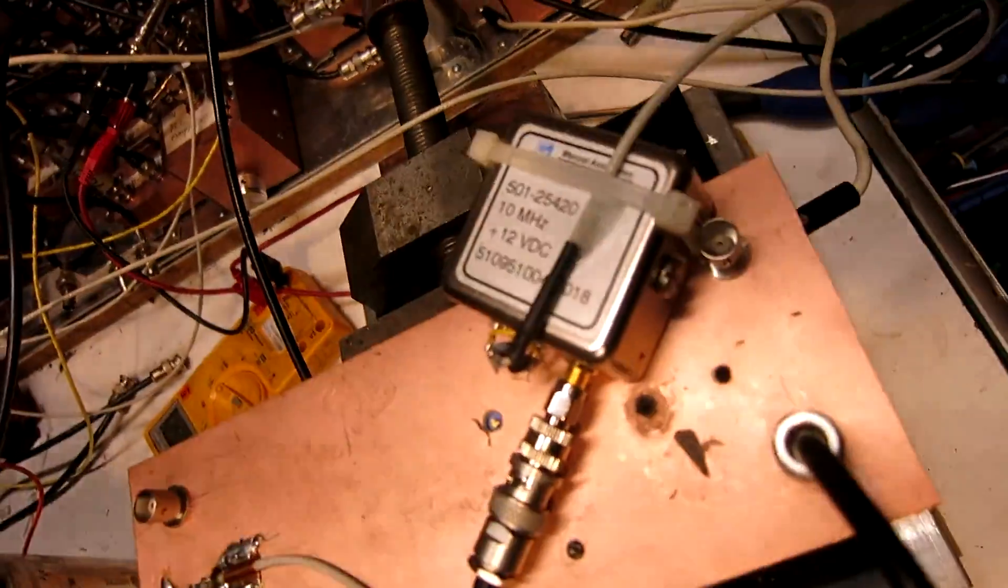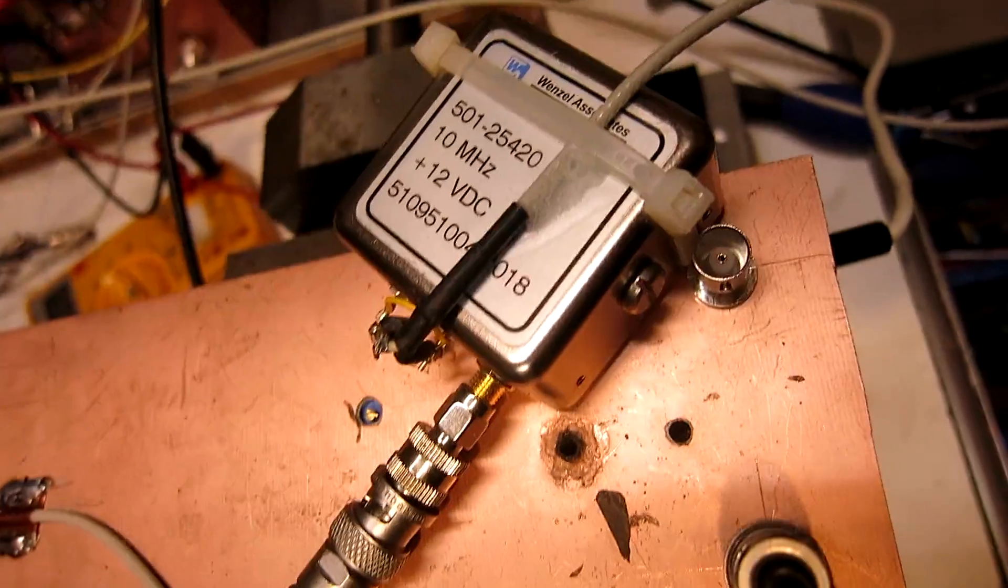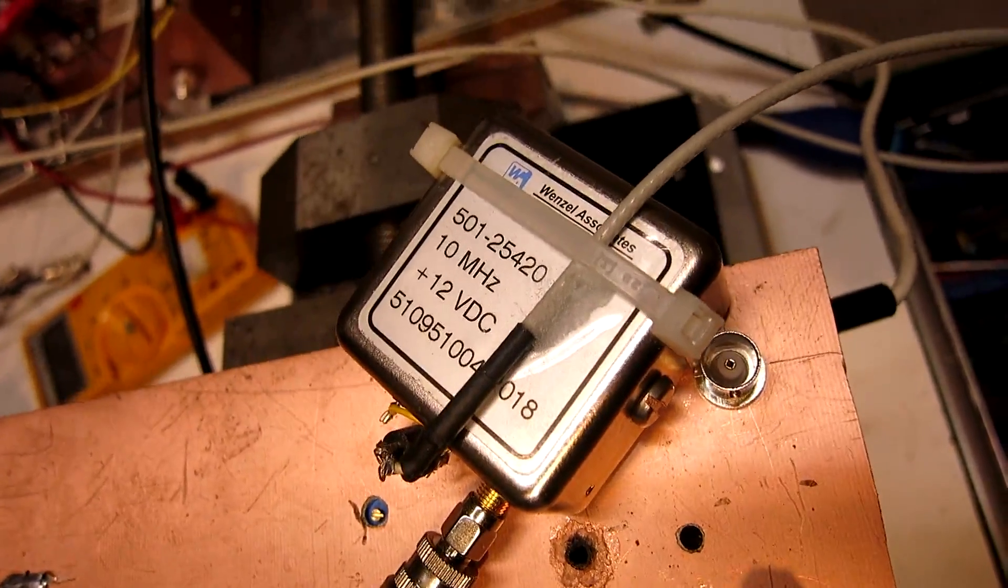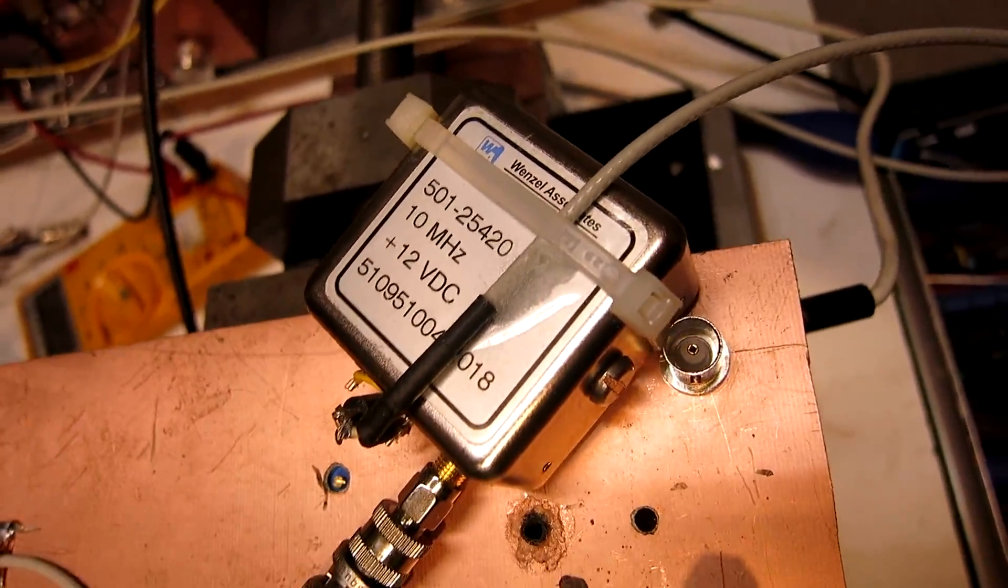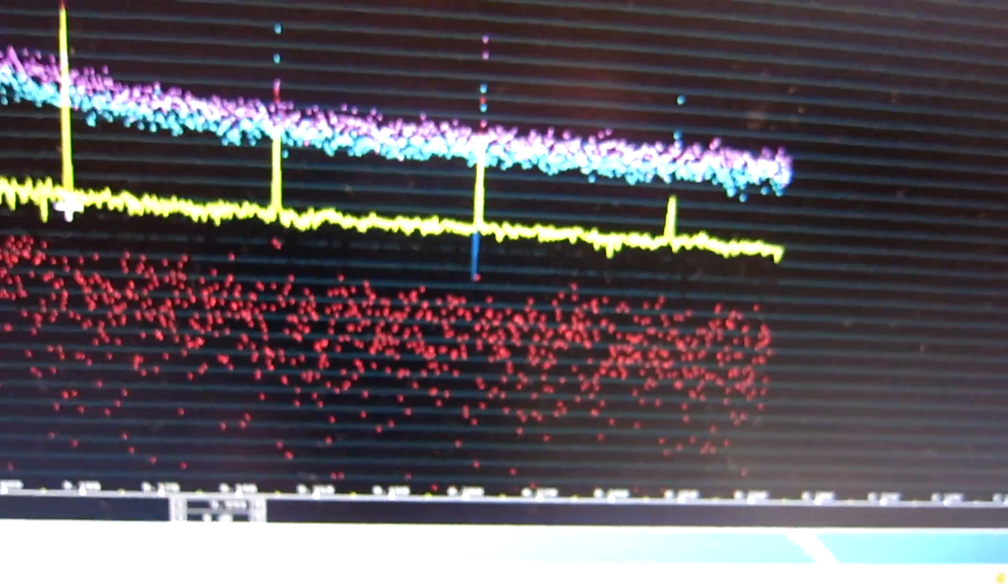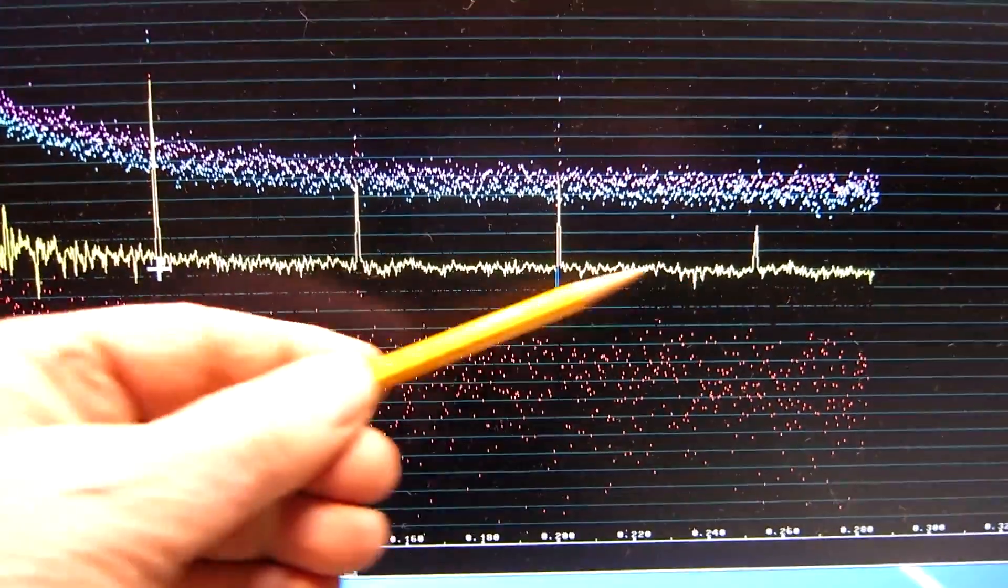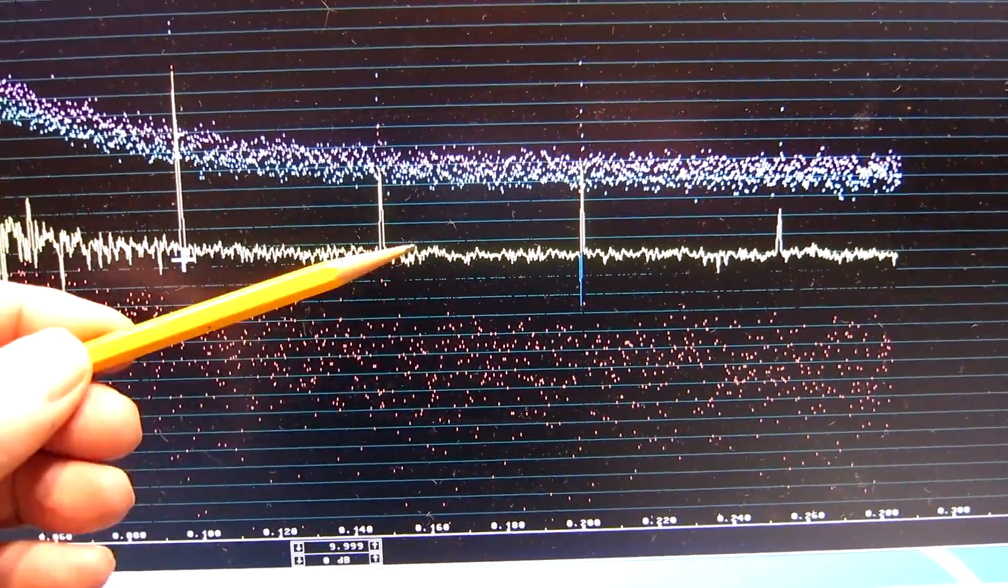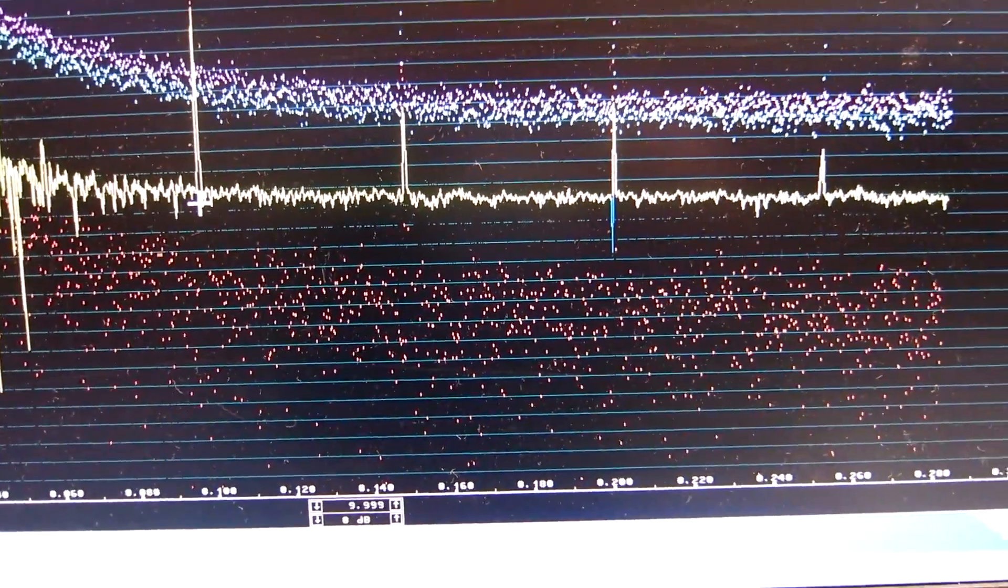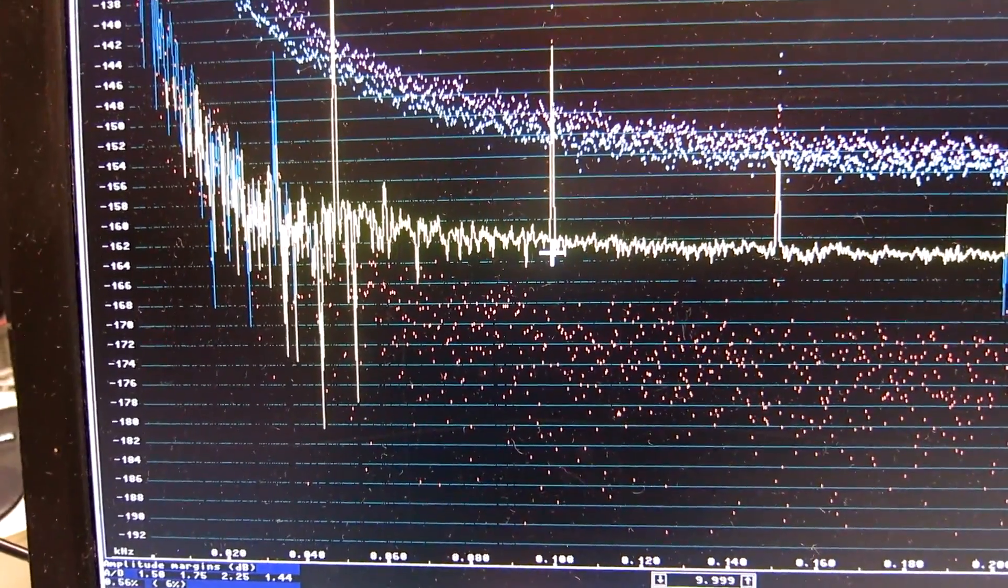I have now connected the Wenzel oscillator directly to my test system, and I placed it on top of the other box to have it vibration isolated. Here is what I see on the screen. The noise is very clearly visible here, high above the imaginary part is the positive real part of the correlation average. At 100 hertz I see minus 162.